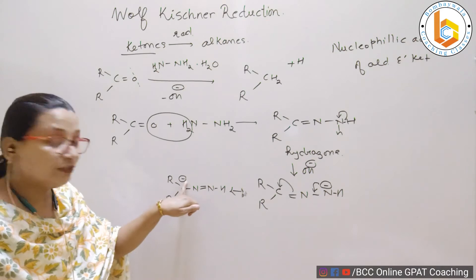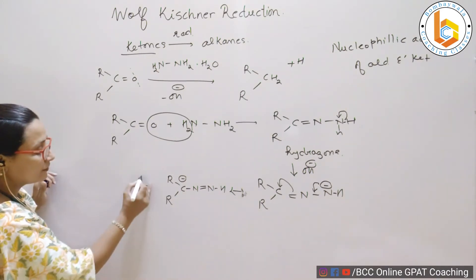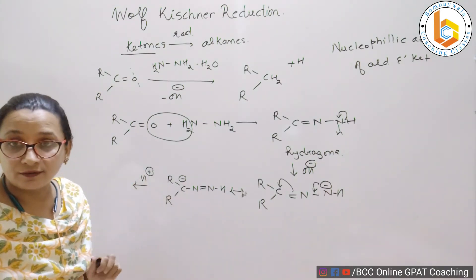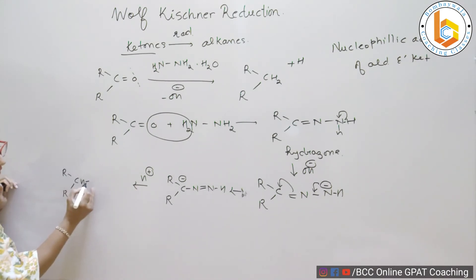On this negatively charged carbon, right, a proton from the system comes in and comes and gets attached here. A proton comes and gets attached here. How do I get it? RCRH, single bond N, double bond N, N and H.